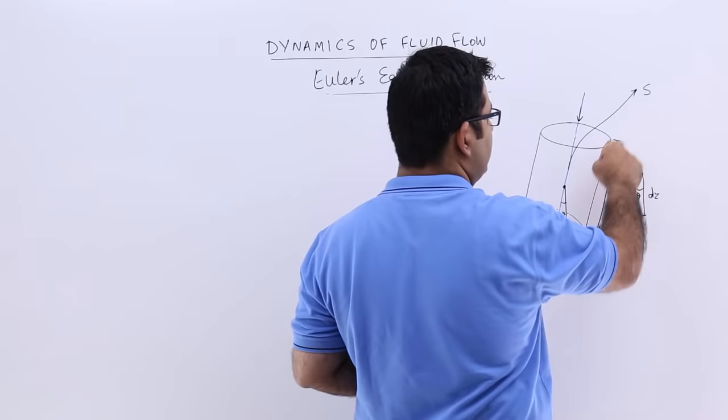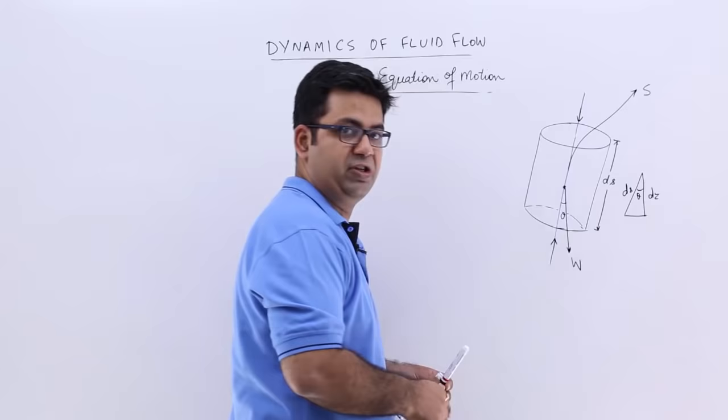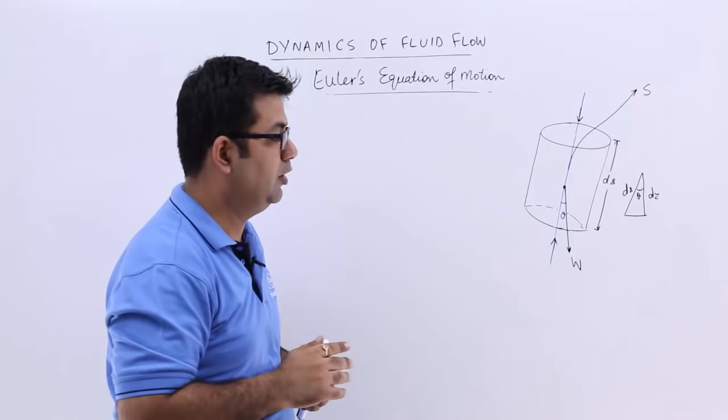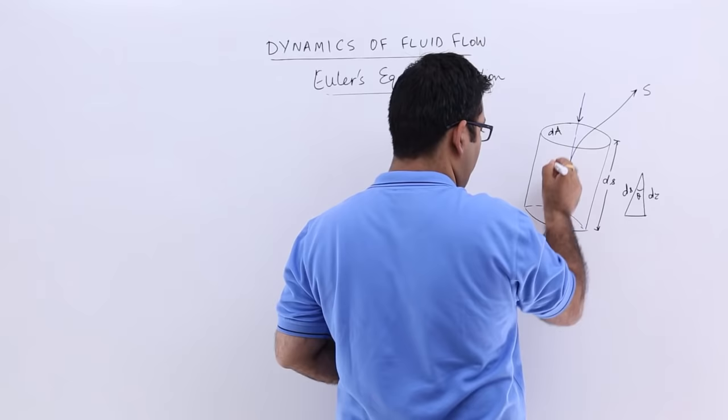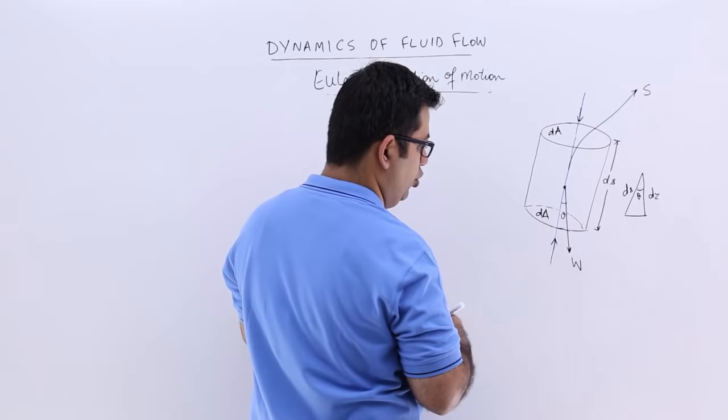On this flow which is represented by this line s, we are assuming a fluid element of length ds. The area of this fluid element or the cross-section area is dA. In the direction of flow, the pressure force acting is pdA.